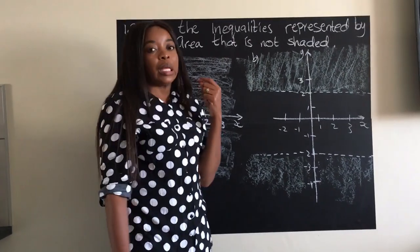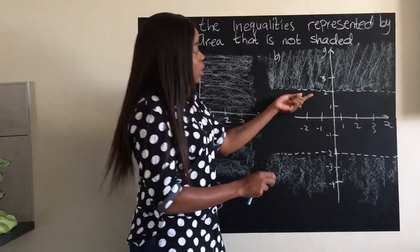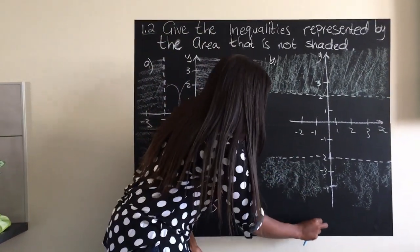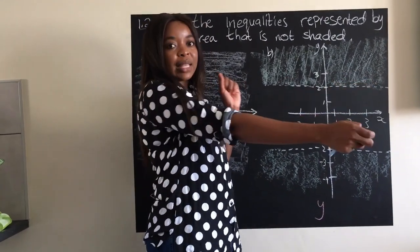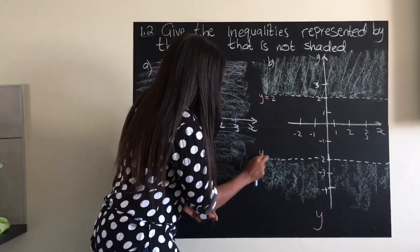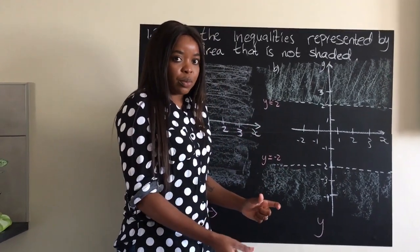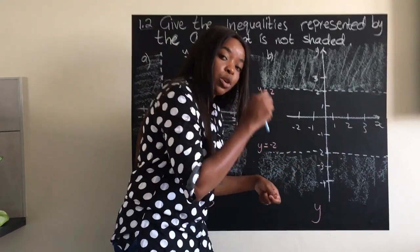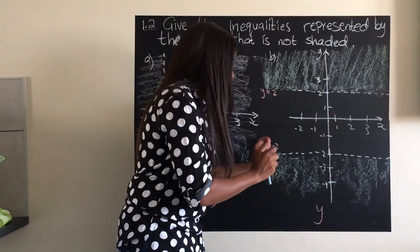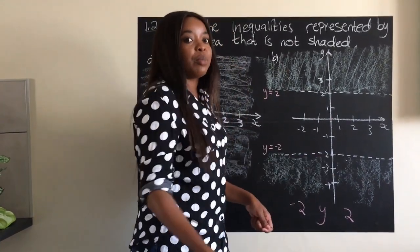Moving to part b: this time the x-axis is not cut at all, so we focus on the y-axis. We'll have y in the middle. The lines are at y equals positive 2 and y equals negative 2. I like to place the negative value on the left and positive on the right so the smaller value comes first.